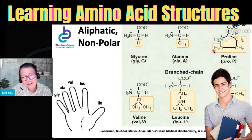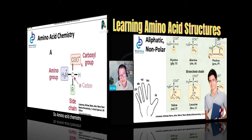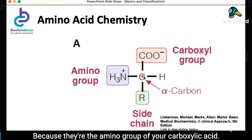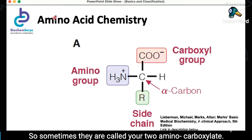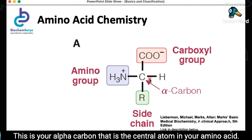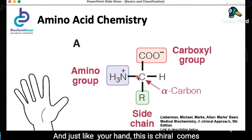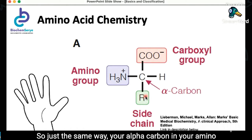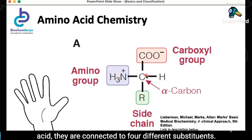It is always best to start discussions on amino acid chemistry by looking into the general structure. So amino acid chemistry — why are they termed amino acid? Because they have the amino group and the carboxylic acid. Sometimes they are called your two amino carboxylate. This is your alpha carbon, that is the central atom in your amino acid. And just like your hand, this is chiral. Chiral comes from the Greek word kairos, meaning hand. Because you have different fingers — you don't have two thumbs. So just the same way, your alpha carbon in your amino acid is connected to four different substituents.